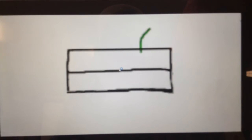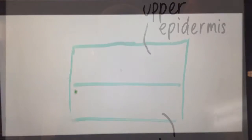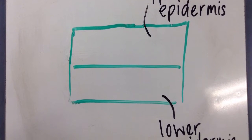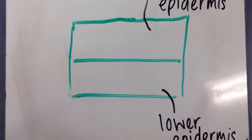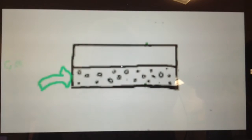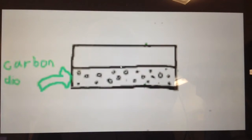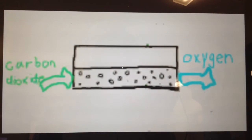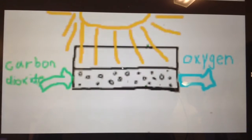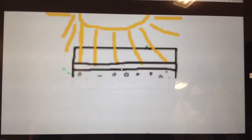The cuticle is the waxy and waterproof surface of the leaf that we see. There are two epidermis in a leaf: the upper epidermis and the lower epidermis. The lower epidermis has many microscopic holes called stomata. The stomata are where the leaf takes in carbon dioxide and emits oxygen. The upper epidermis is transparent to allow sunlight to get through and reach the palisade.